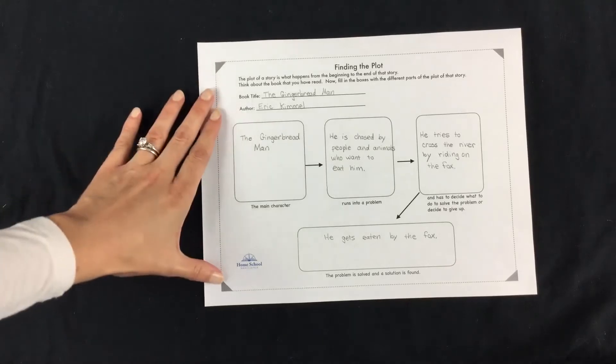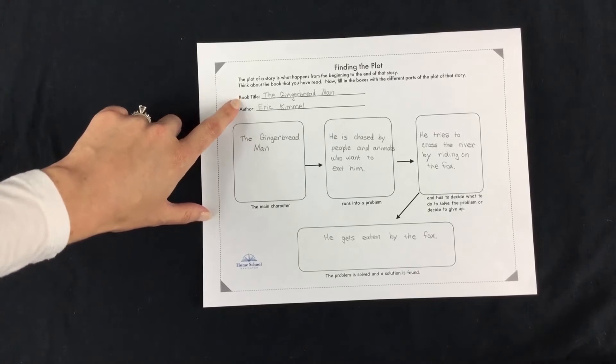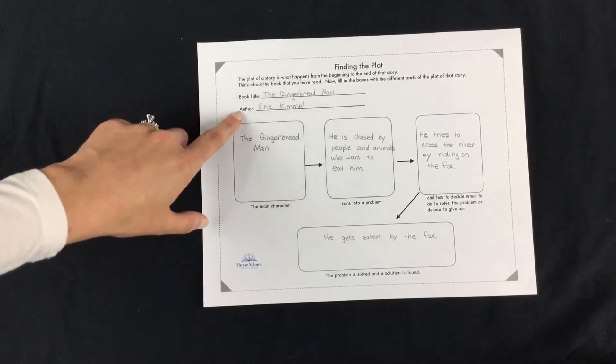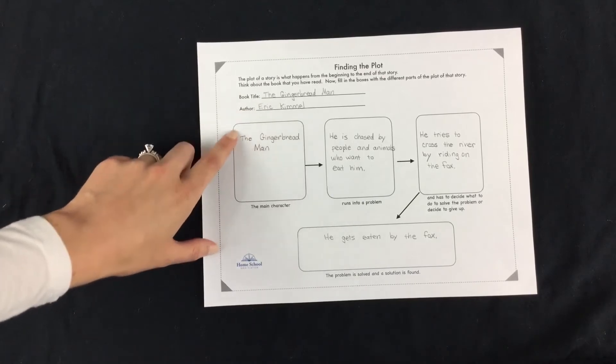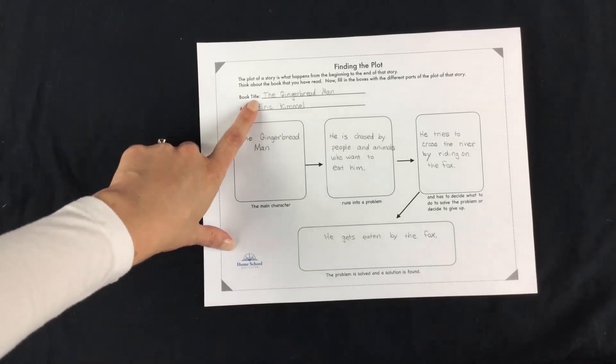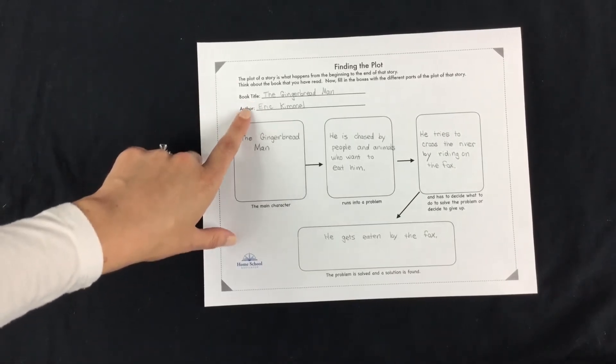So you should be looking at your handout that looks like this. You're going to start off with my example that we're going to be sharing here, The Gingerbread Man by Eric Kimmel. Now, you are going to be filling yours out about a different book. So you're going to start with the book title and the author's name.